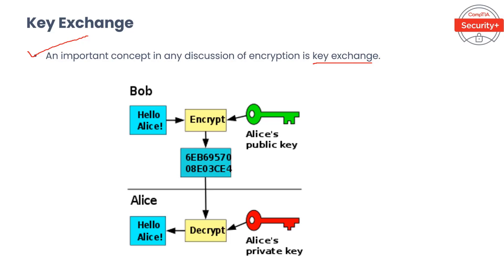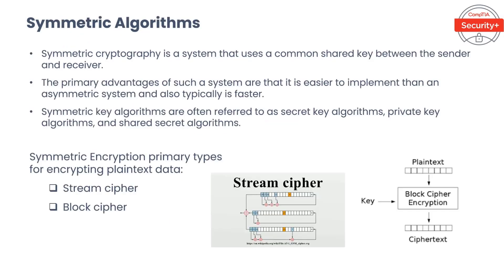Key exchange. An important concept in any discussion of encryption is key exchange. Historically, the challenge has been that to get a secret, you must share a secret. Consider a simple analogy: imagine you are friends with someone who requires a secret password — perhaps 'open sesame' — to gain access. The problem is that the secret password has to be shared, which is likely not going to be secure and will be subject to eavesdropping. Modern cryptography solves these age-old challenges. Exchanging keys in many applications happens securely in-band when you need to establish a secure session. Any type of out-of-band key exchange relies on sharing in advance, meaning the key is delivered outside the network or process from which it will actually be used.